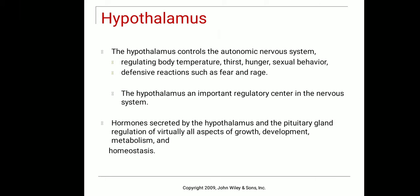The hypothalamus consists of the autonomic nervous system, which regulates body temperature — we call it the thermoregulatory center — as well as thirst, hunger, sexual behavior, and defensive mechanisms. The hormones secreted by the hypothalamus activate the pituitary gland. The pituitary gland helps in the maintenance of homeostasis, growth and development, and metabolism.